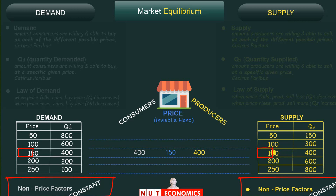To demonstrate this, I'll first assume the price is lower than the equilibrium price of 150 — we'll choose the lowest price of 50. Then I'll choose a price higher than 150 — we'll pick the highest possible price of 250. I'll now show you how in both cases the price will automatically move to the equilibrium price of 150.